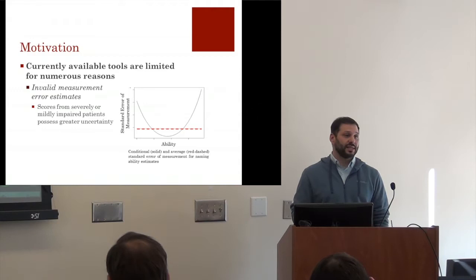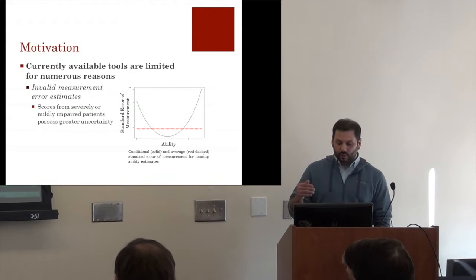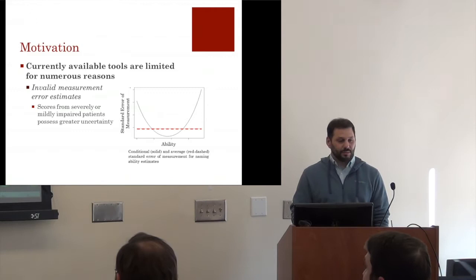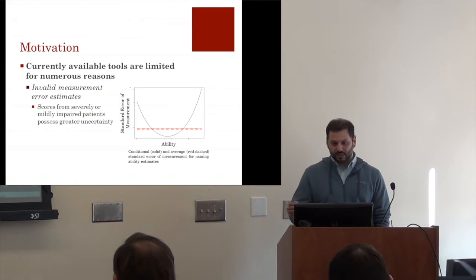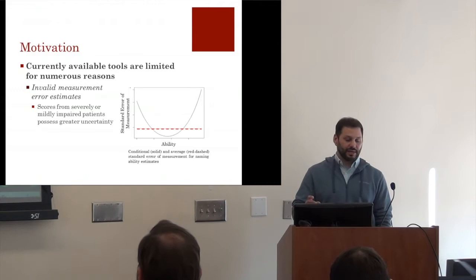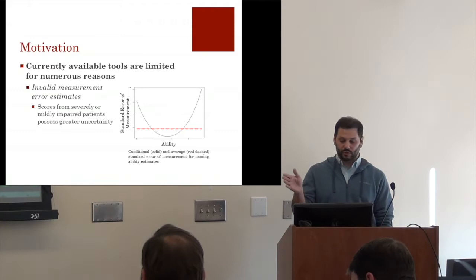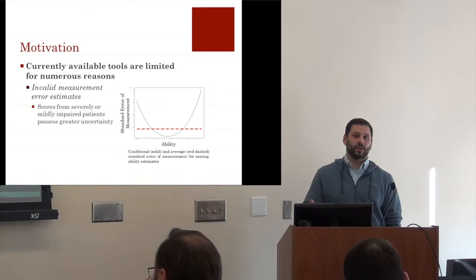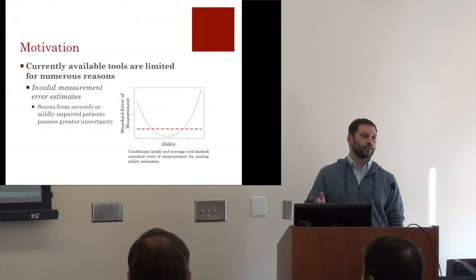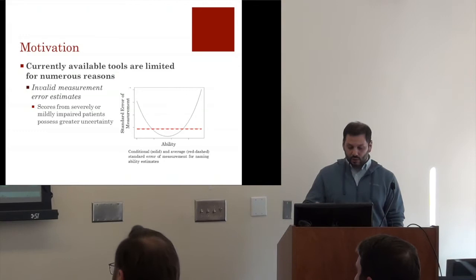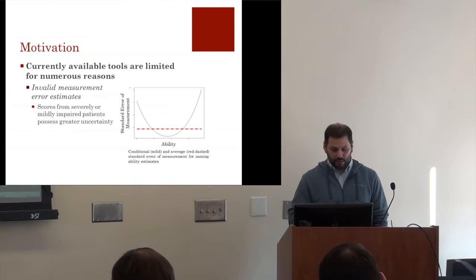Despite their widespread use, confrontation naming tests are limited in several ways. The tools currently available mostly assume a constant measurement error, meaning when we see results on a confrontation naming test, it doesn't matter who we're assessing — the reliability is the same regardless of whether you're testing someone with severe deficits, mild deficits, or somewhere in between. However, professionals working with people with aphasia know from experience that a test is not equally reliable for every patient.